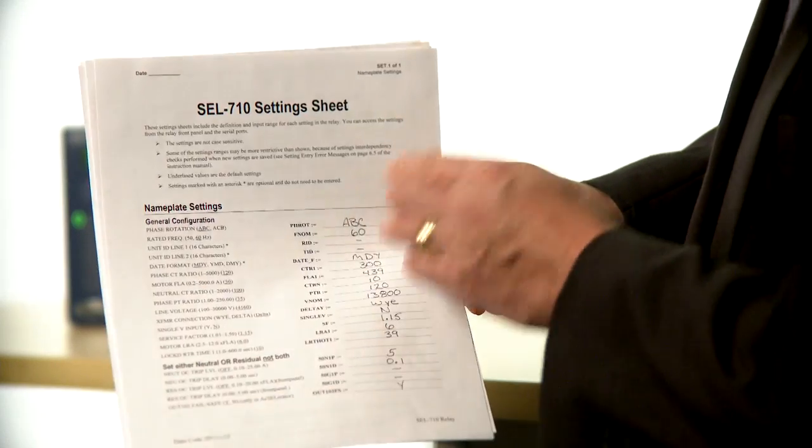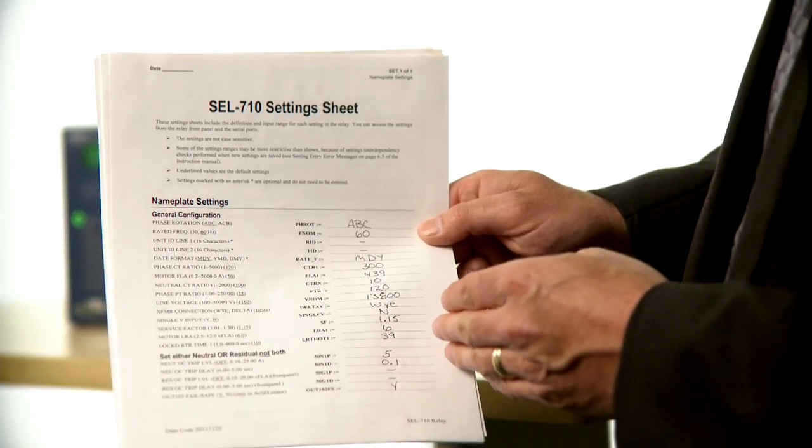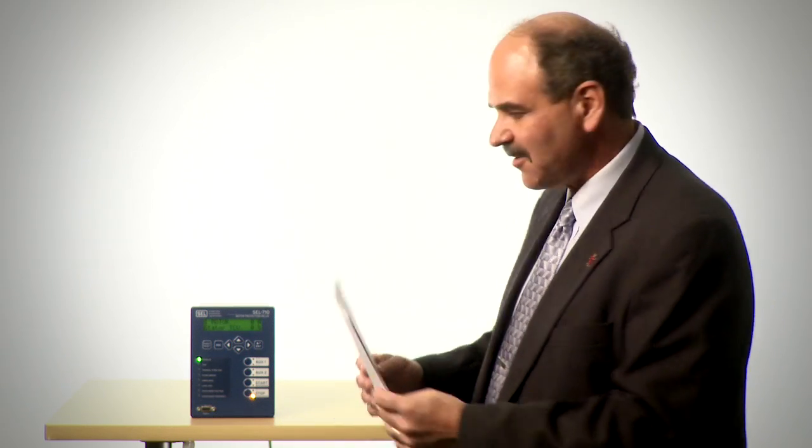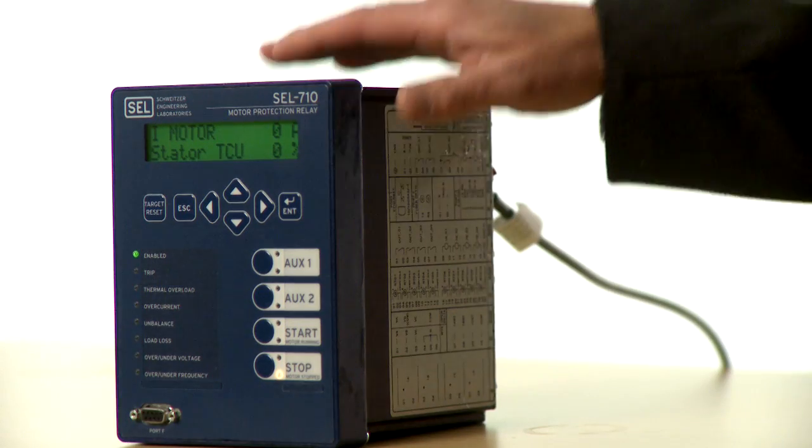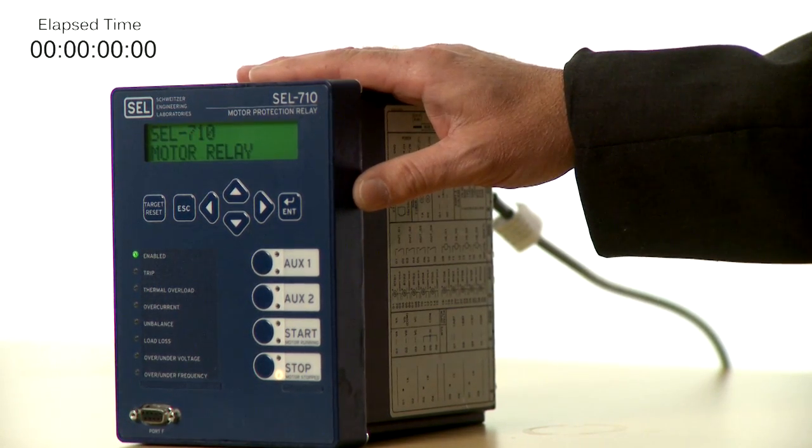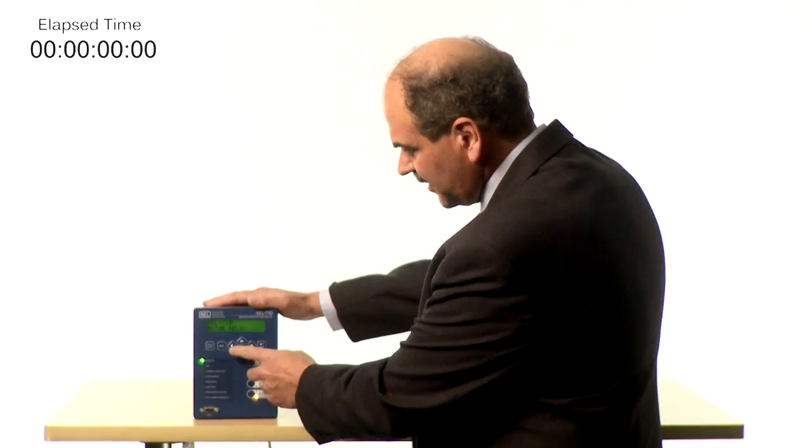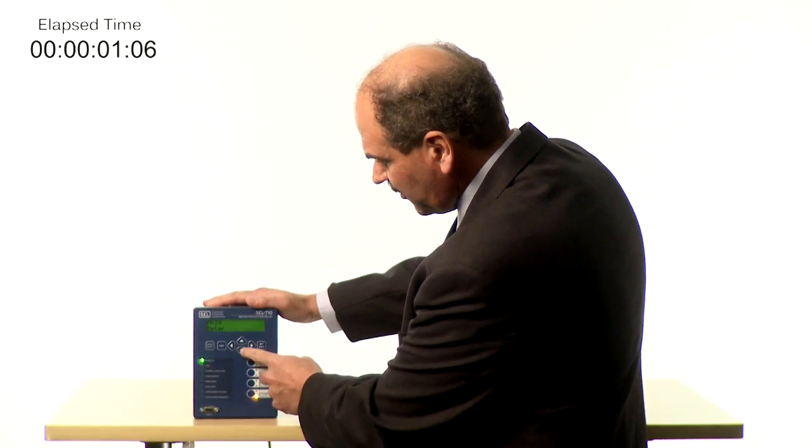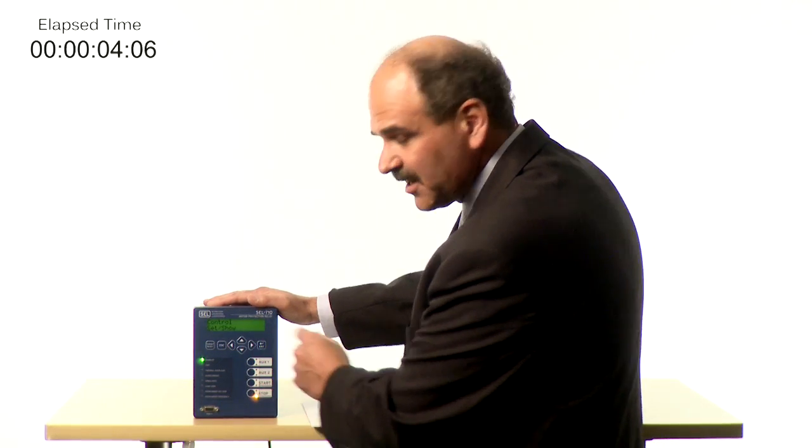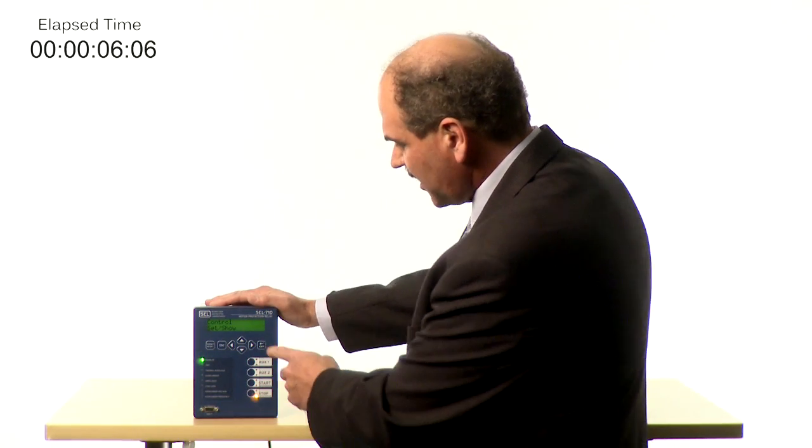So I went ahead and pulled all this information off those sheets and I filled out my nameplate application setting sheet with all the information I need to set the relay. So let's go ahead and do that. Let's set that relay. Again, I'm going to do the information setting right from the front panel. And to get started, I'm going to select the Set Show menu. That's where you make the setting changes.